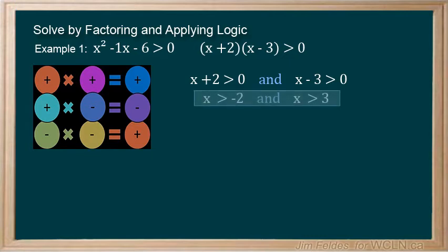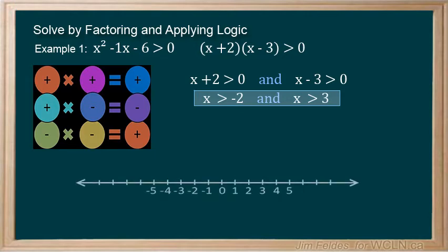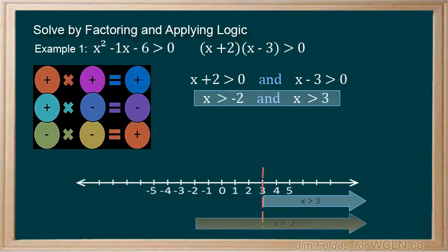So, X must be greater than negative 2, and X must be greater than 3 to get a positive product. And if X is greater than 3, it's certainly greater than negative 2, so we can eliminate the first restriction.